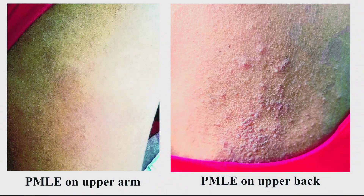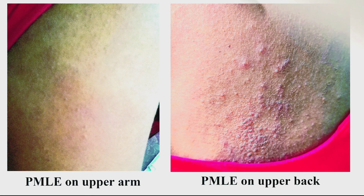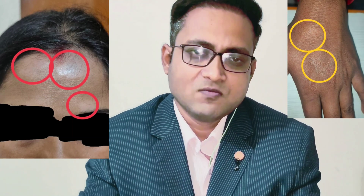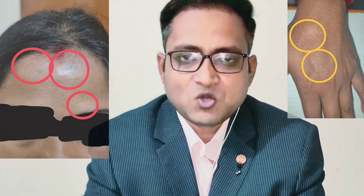Back of the neck, upper back, chest, and the outer side of the upper arm and forearm are the most commonly affected sites. Face and hands are less commonly involved as they become tolerant to sun exposure from childhood.